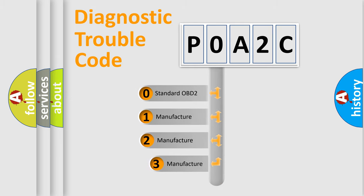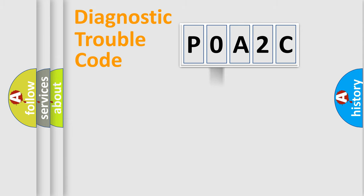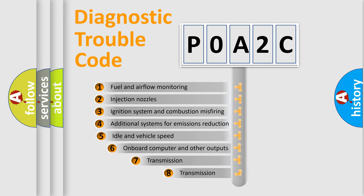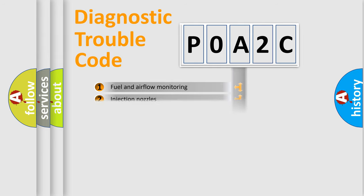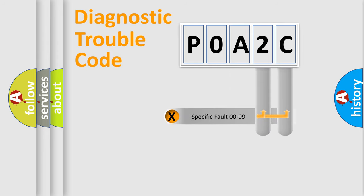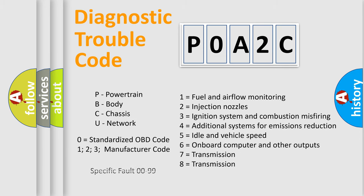If the second character is expressed as zero, it is a standardized error. In the case of numbers 1, 2, 3, it is a manufacturer-specific error. The third character specifies a subset of errors. The distribution shown is valid only for the standardized DTC code. Only the last two characters define the specific fault of the group. Let's not forget that such a division is valid only if the second character code is expressed by the number zero.